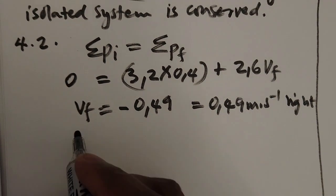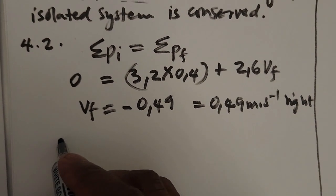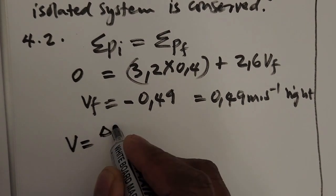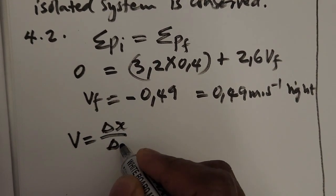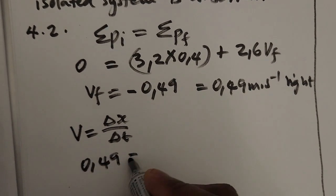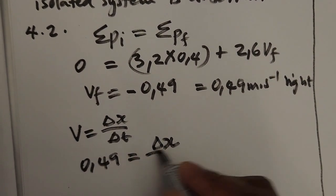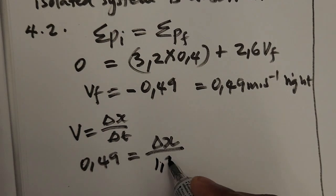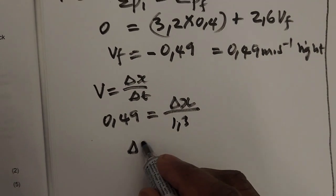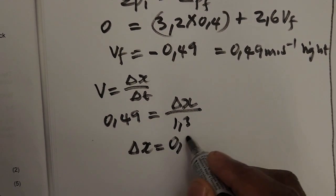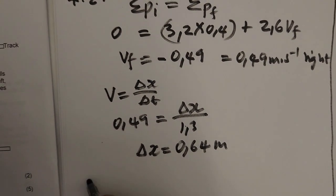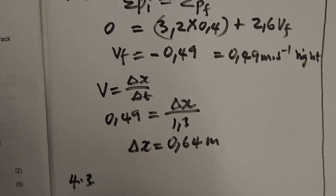Now to find the distance, using velocity = Δx / Δt, we get 0.49 = Δx / 1.3, therefore Δx = 0.64 meters. That's relatively straightforward. Now let's move to question 4.3.